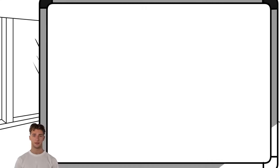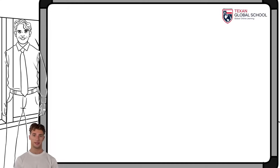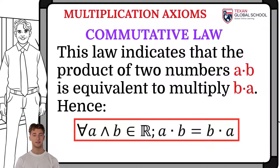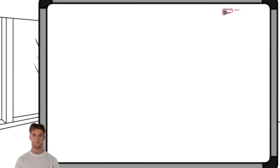The commutative law indicates that the product of two numbers A by B is equivalent to multiplying B by A. Let's look at an example.